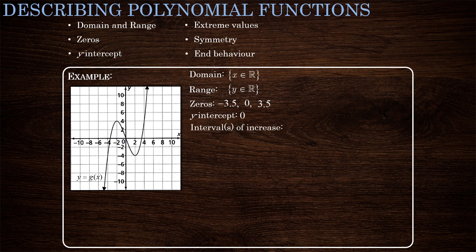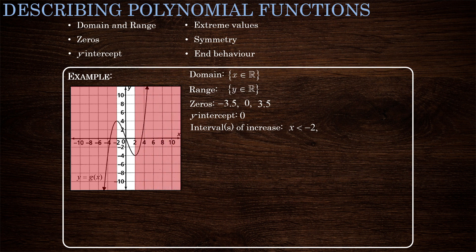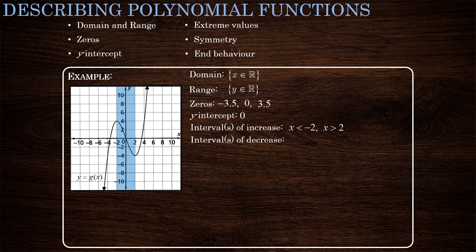Let's talk about where this function increases and decreases. It increases for all x values below negative 2 and also for all x values above 2. It has an interval of decrease from negative 2 to 2. When describing intervals of increase and decrease, we do not include the values where the function switches — so we don't include negative 2 or 2 in any of these intervals.